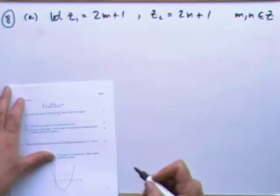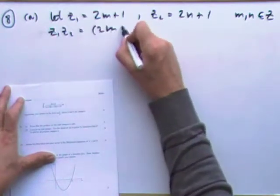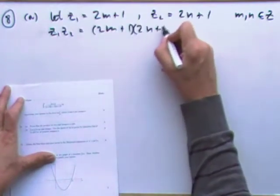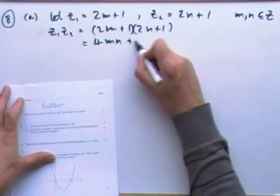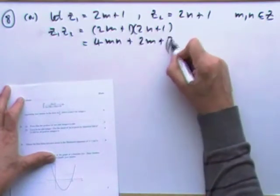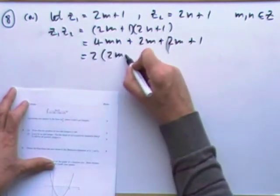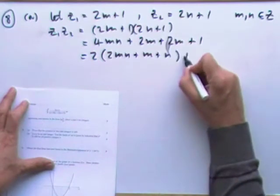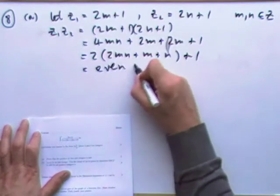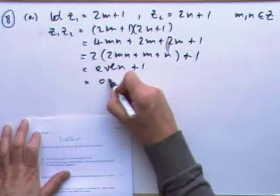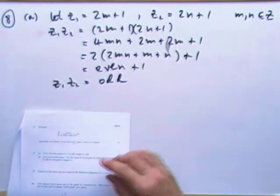Prove that the product z₁z₂ is odd. z₁z₂ = (2m+1)(2n+1) = 4mn + 2m + 2n + 1. Taking out the common factor of 2: 2(2mn + m + n) + 1. By definition that bracketed part is an even number, so even plus 1 makes an odd number. Therefore z₁z₂ must be odd.